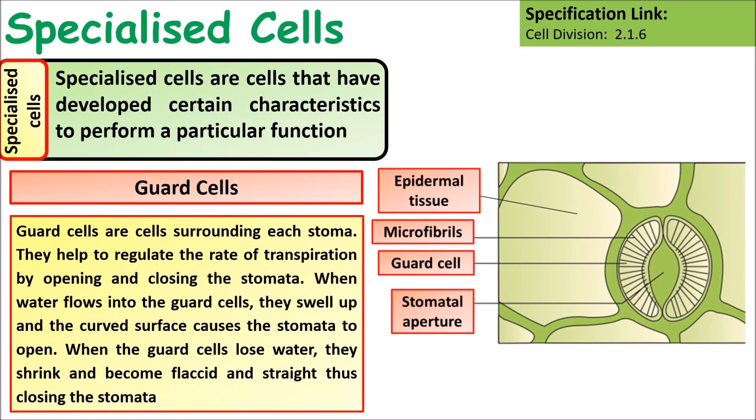Guard cells surround the stomata and help regulate the rate of transpiration by opening and closing the stomata. When water flows into the guard cells they swell up, curve, and open the stomata. When the guard cells lose water they shrink, become flaccid, and close the stomata.